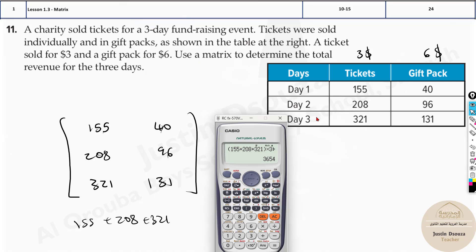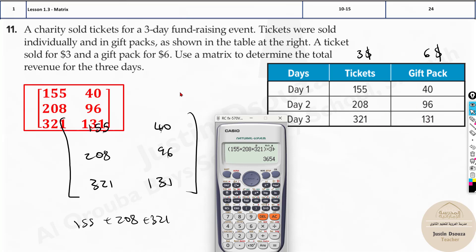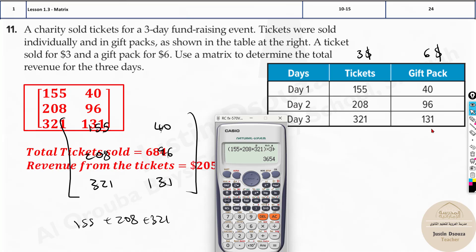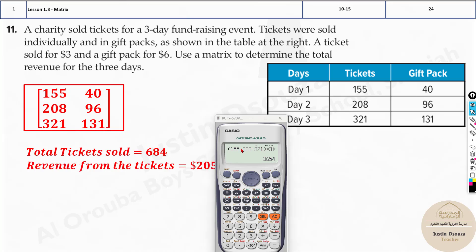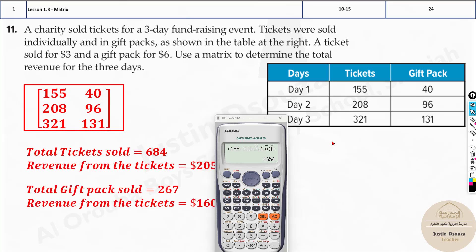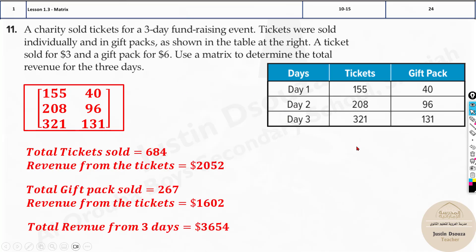If they ask for revenue generated in day three only, multiply the tickets sold on day three by 3, then add 131 times 6. The final answer is $3,654 for the full three days.